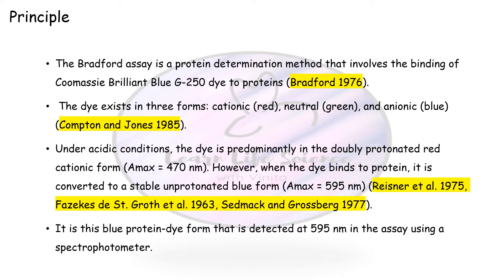Covering the principle: the Bradford assay is a method of protein determination that simply involves the binding of Coomassie Brilliant Blue G250 dye to the protein. This statement was given by Bradford in 1976. He stated that in this reaction there is simple binding of the dye with proteins, and certain features of the dye give it a characteristic appearance at the end of the reaction.